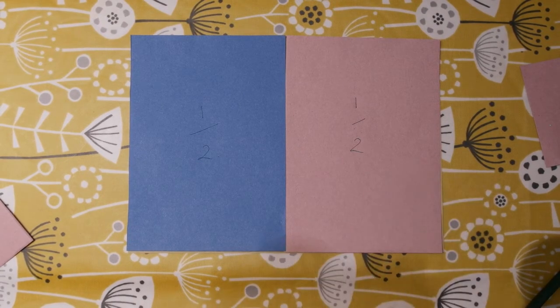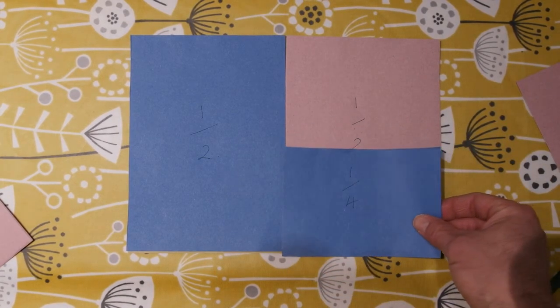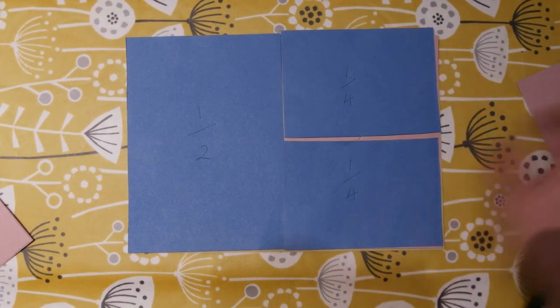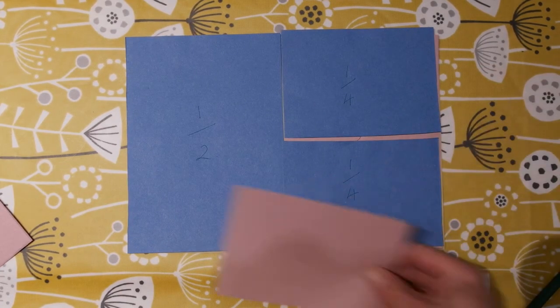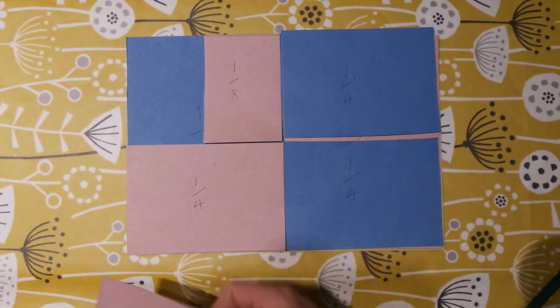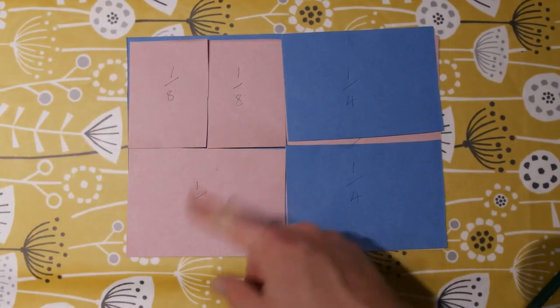And the nice thing now is we can start to lay these out. So again, we can see the two halves. If we now lay the quarters on top, we can see that two quarters are the same. We can see that one quarter and two eighths are the same as the half.